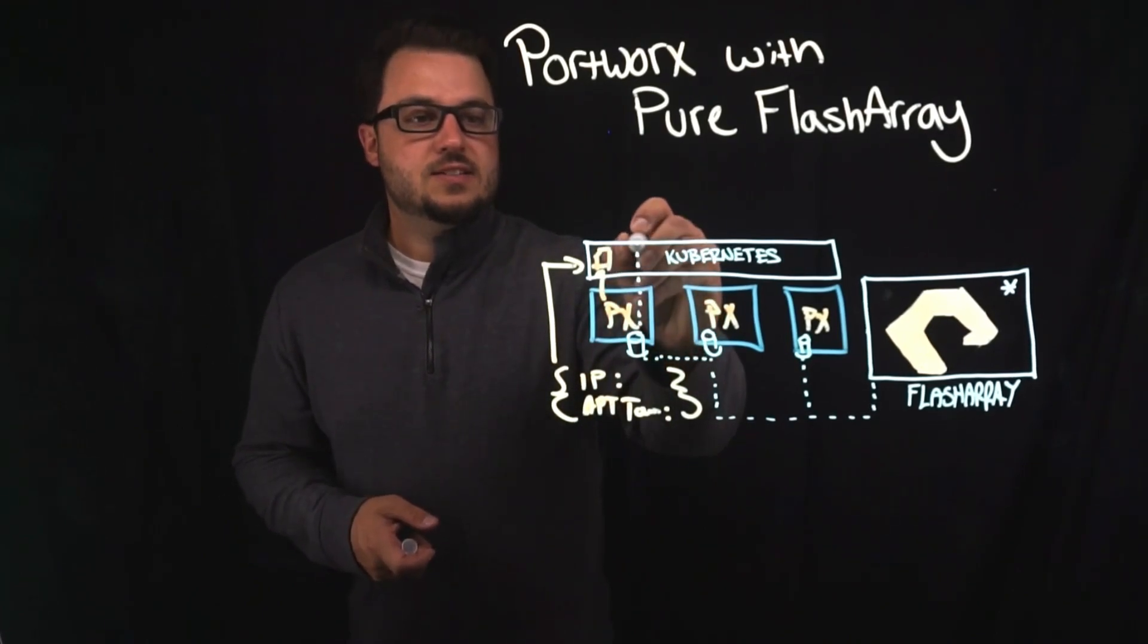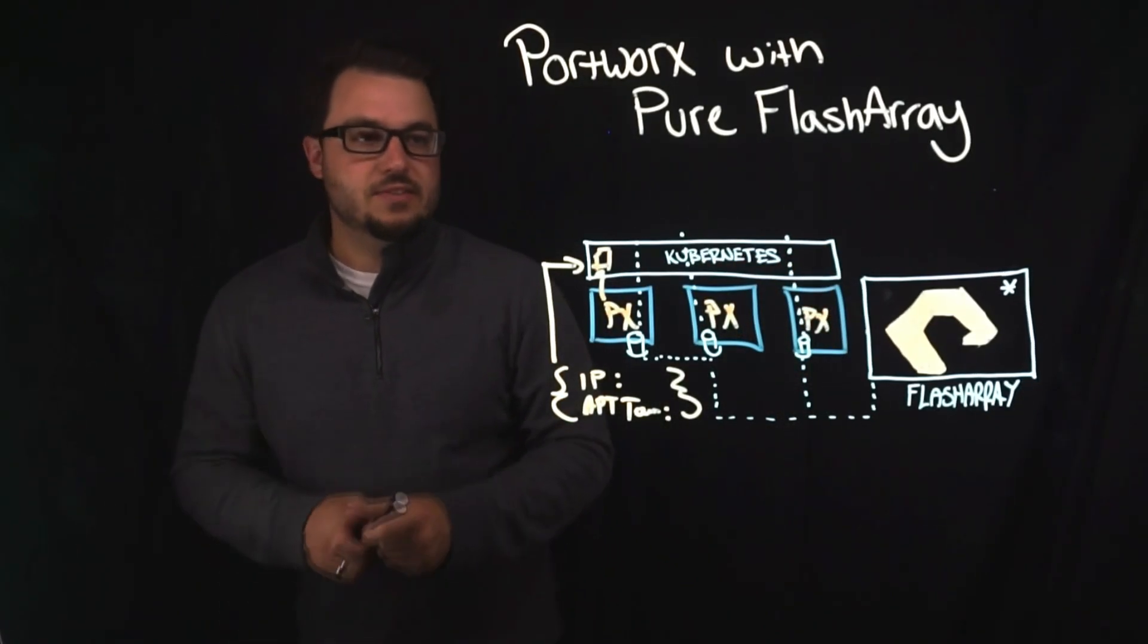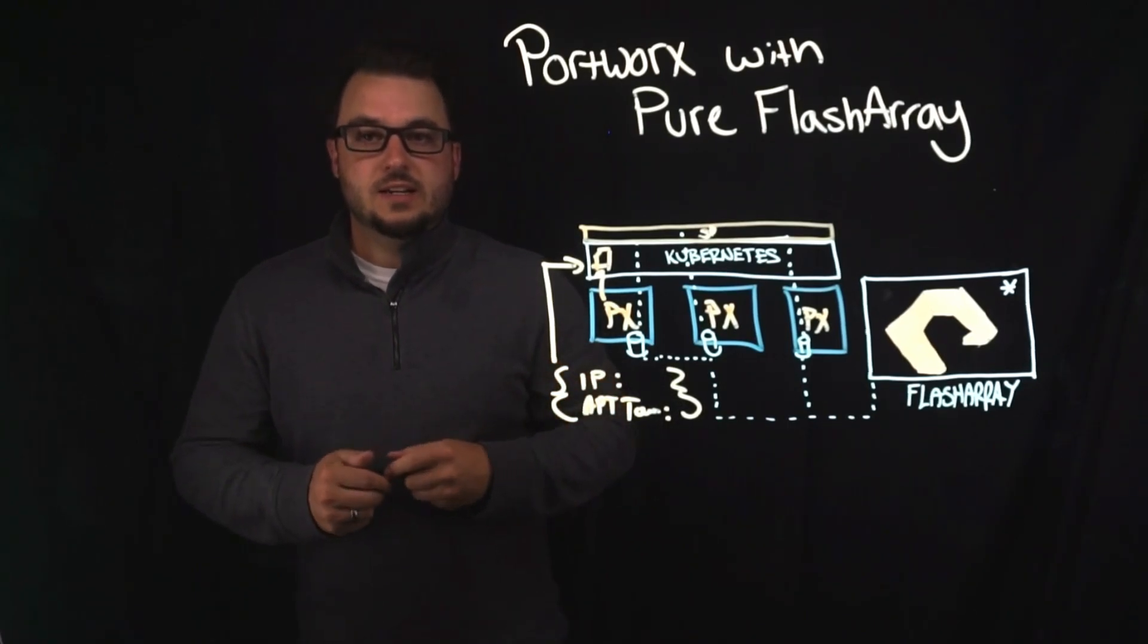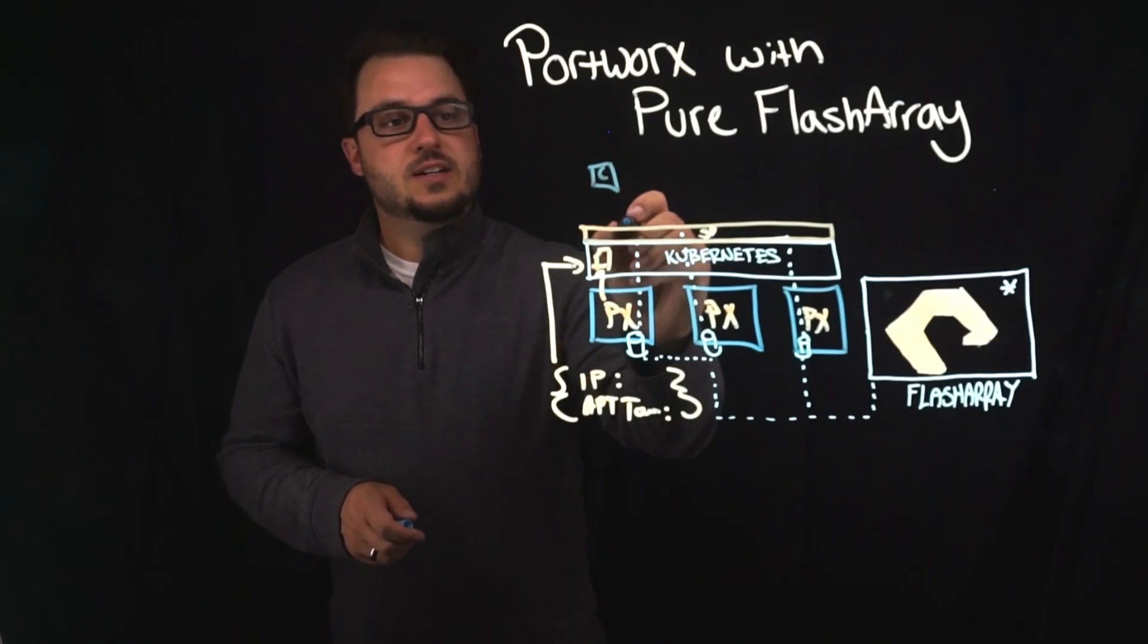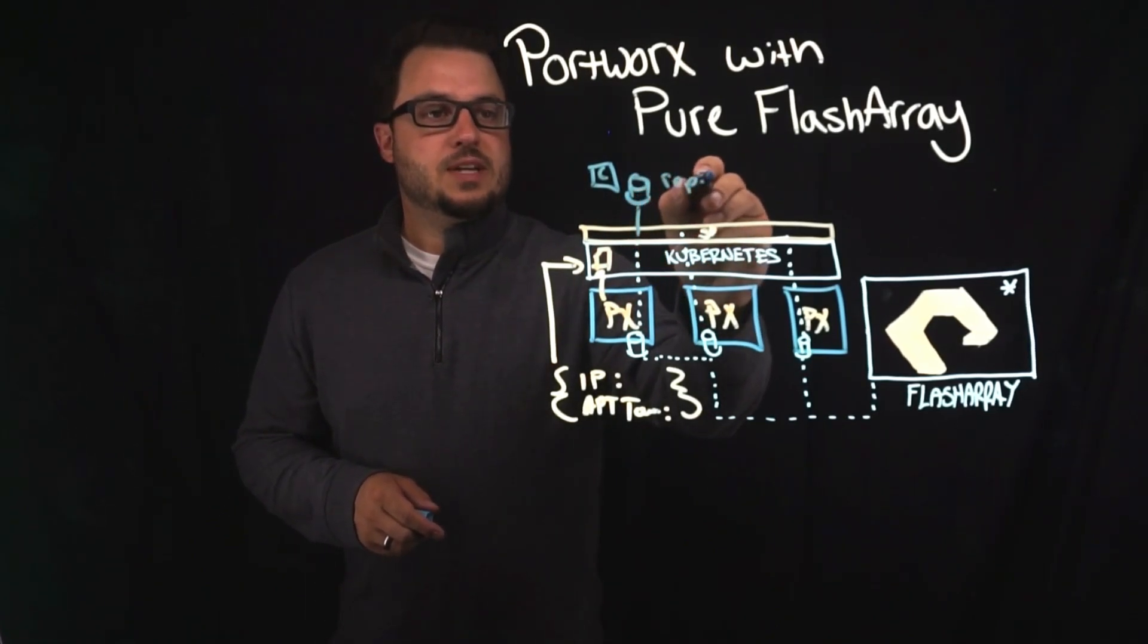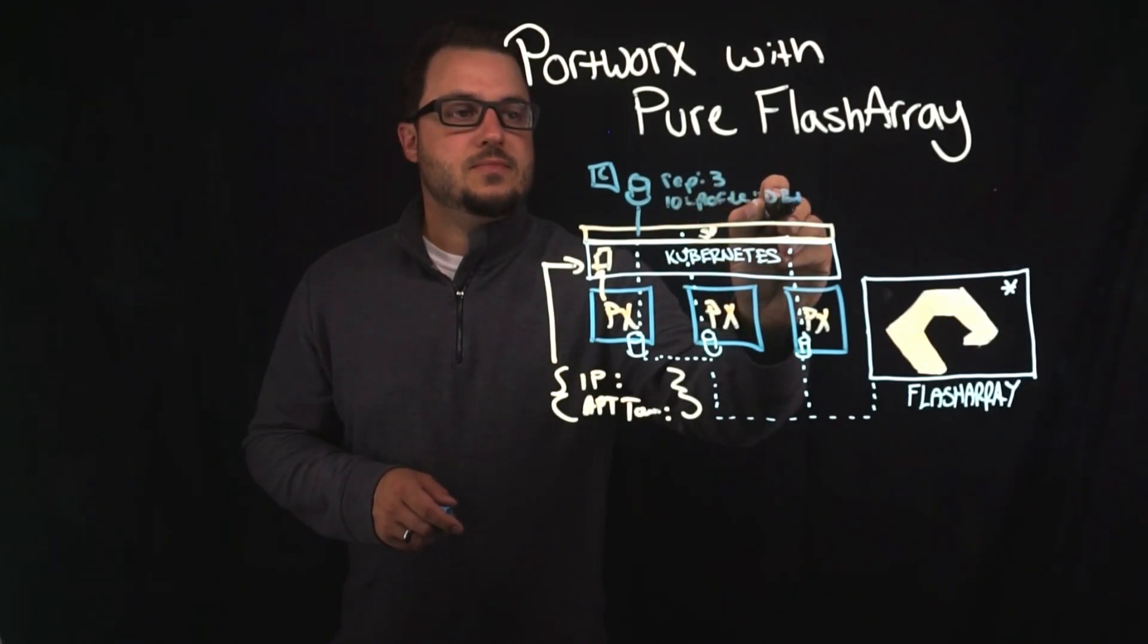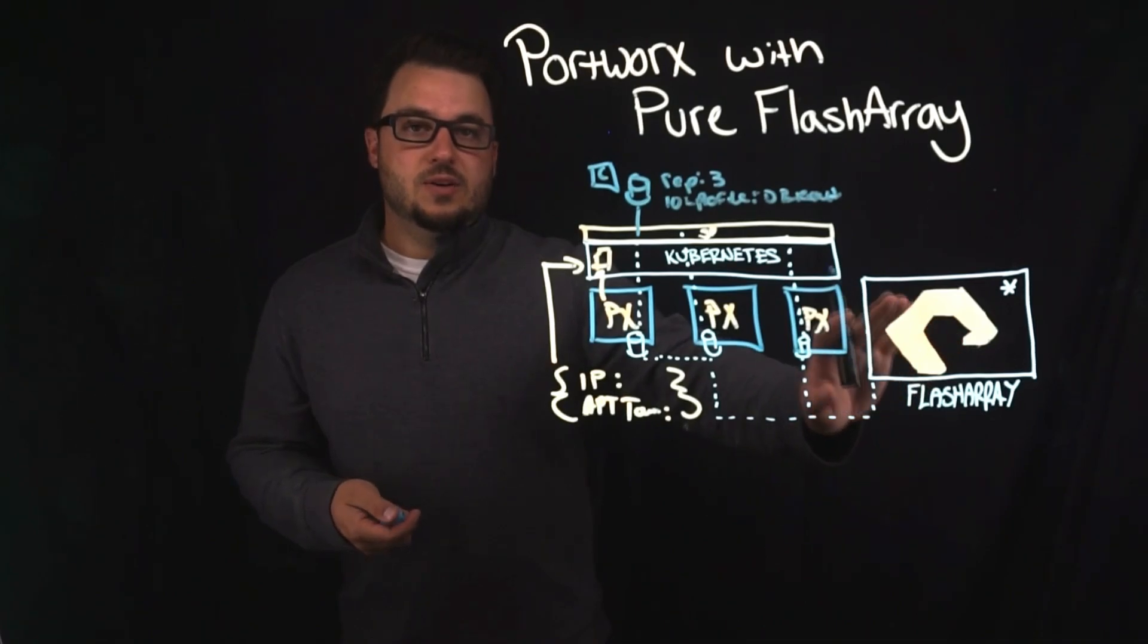After that, these LUNs are now part of a Portworx storage pool that is now globally available to all your containers. So this storage pool becomes available and you can create Portworx virtual volumes as you normally would for any other container. The difference is your backing storage is now flash array.